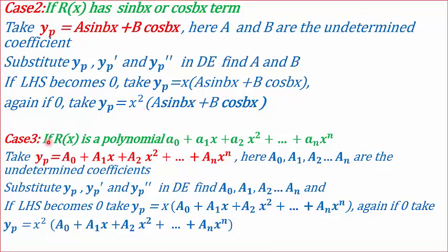In the third case, we deal with a situation where r(x) is a polynomial. Let's say r(x) is of the form a₀ + a₁x + ... + aₙxⁿ. Then we take yp = A₀ + A₁x + ... + Aₙxⁿ, where all the Aᵢ's are the undetermined coefficients. We substitute yp and its derivatives, compare the coefficients, and find the Aᵢ's. If the left-hand side becomes 0, multiply by x; again 0, multiply by x².